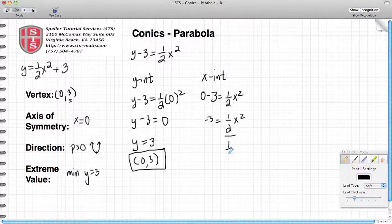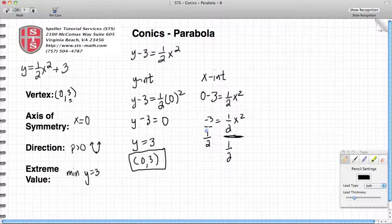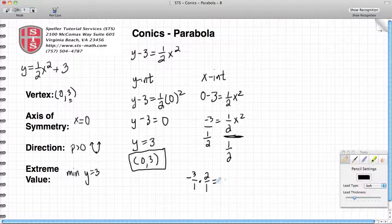I'm going to get that x squared by itself, so I'm going to divide both sides by 1 half. I see here that I have a whole number and I'm dividing by a fraction, so I'm going to change negative 3 into a fraction negative 3 over 1 and multiply by the reciprocal, which would be 2 over 1, and that's going to give me this here on the left hand side. On the right hand side, 1 half divided by 1 half simplifies down to 1, leaving us with just an x squared.